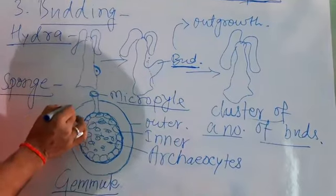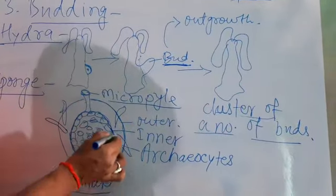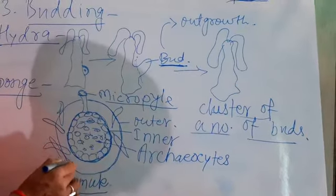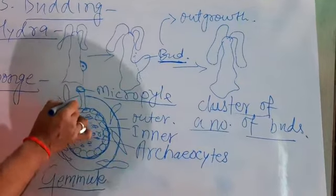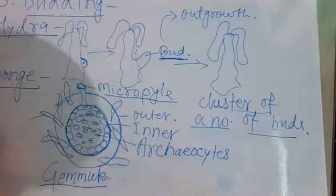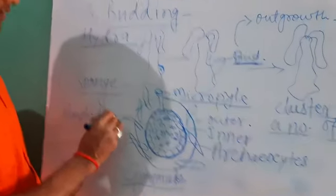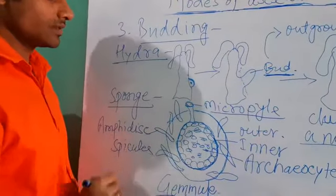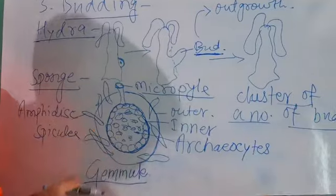There are large numbers of spicules and disc spicules. This is called amphidisc. Amphidisc spicules surround the archeocytes and also protect it.